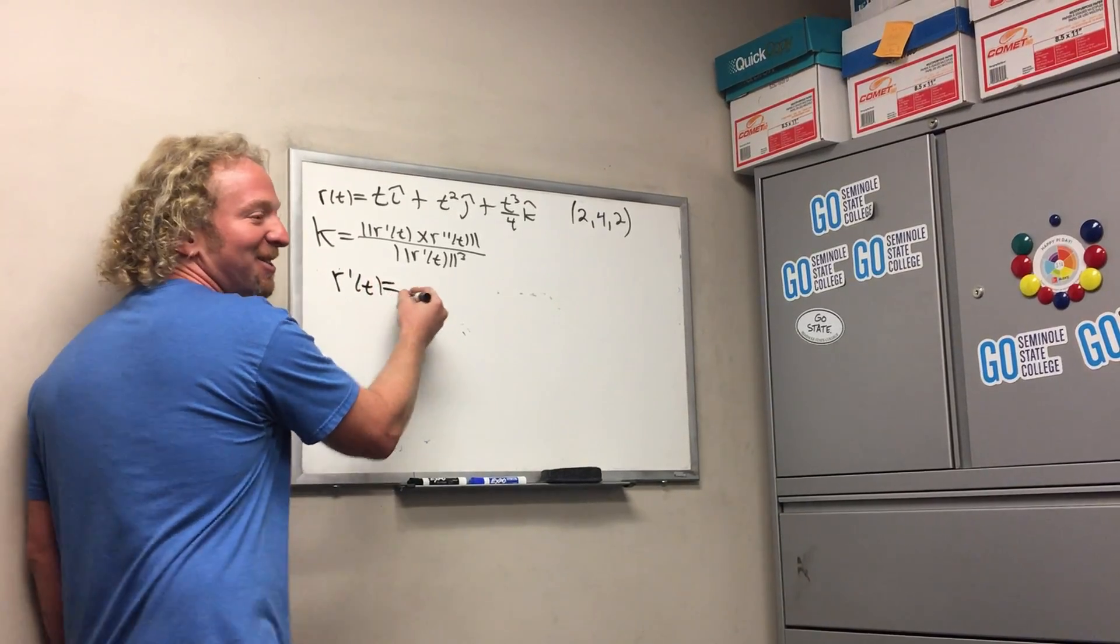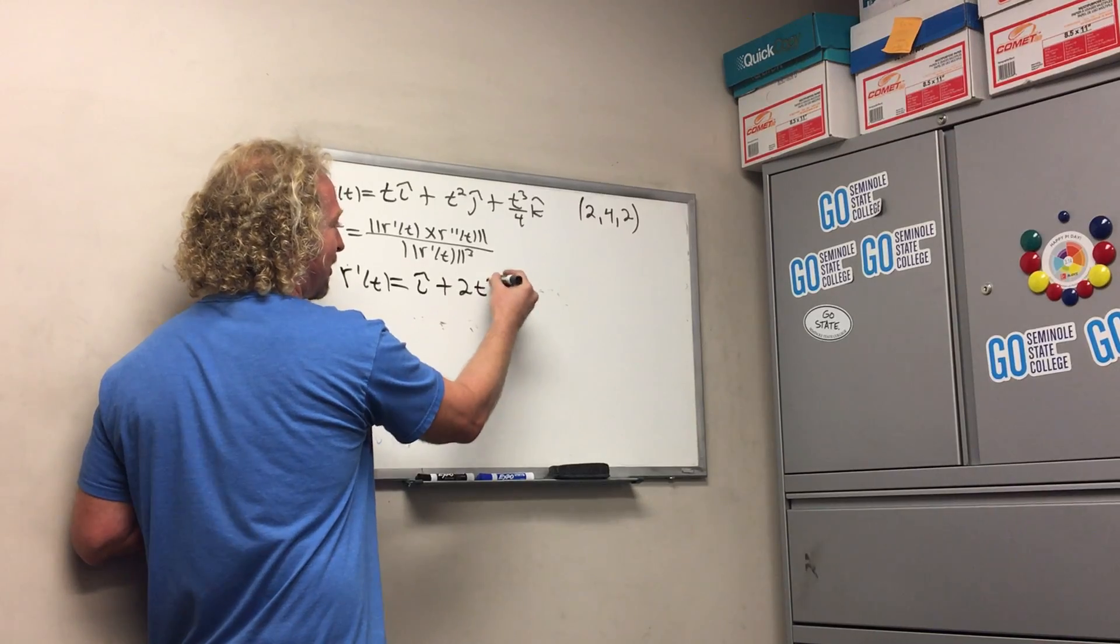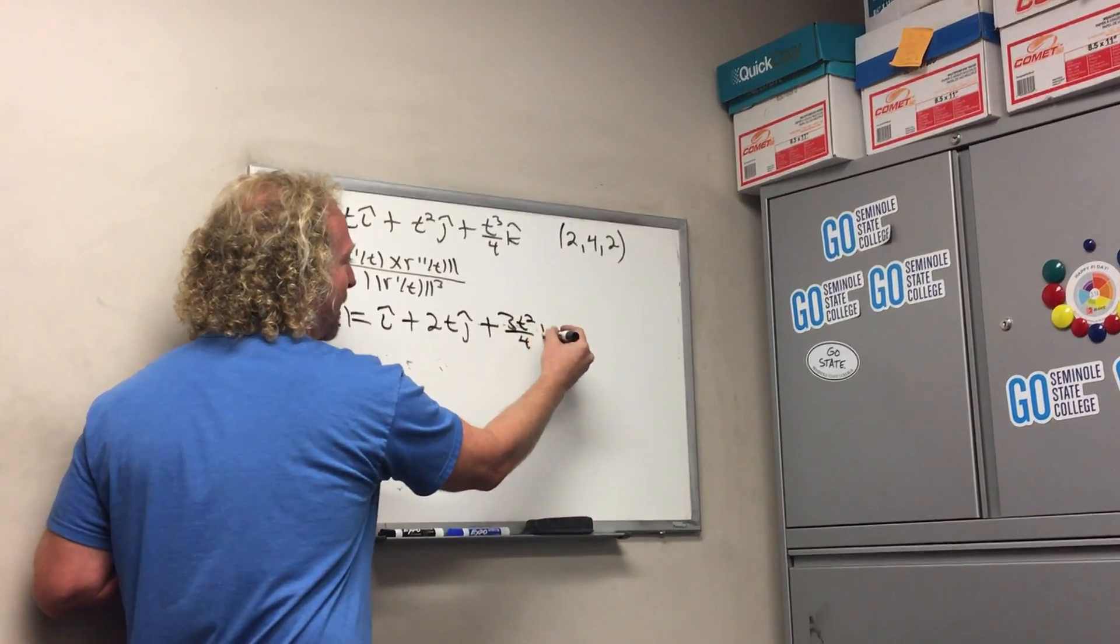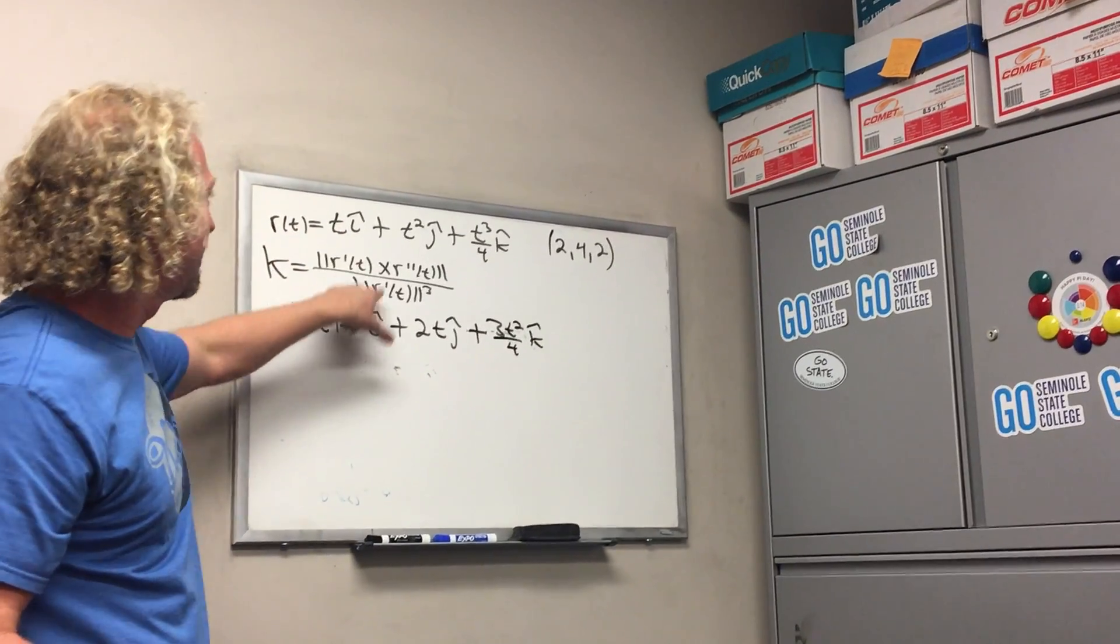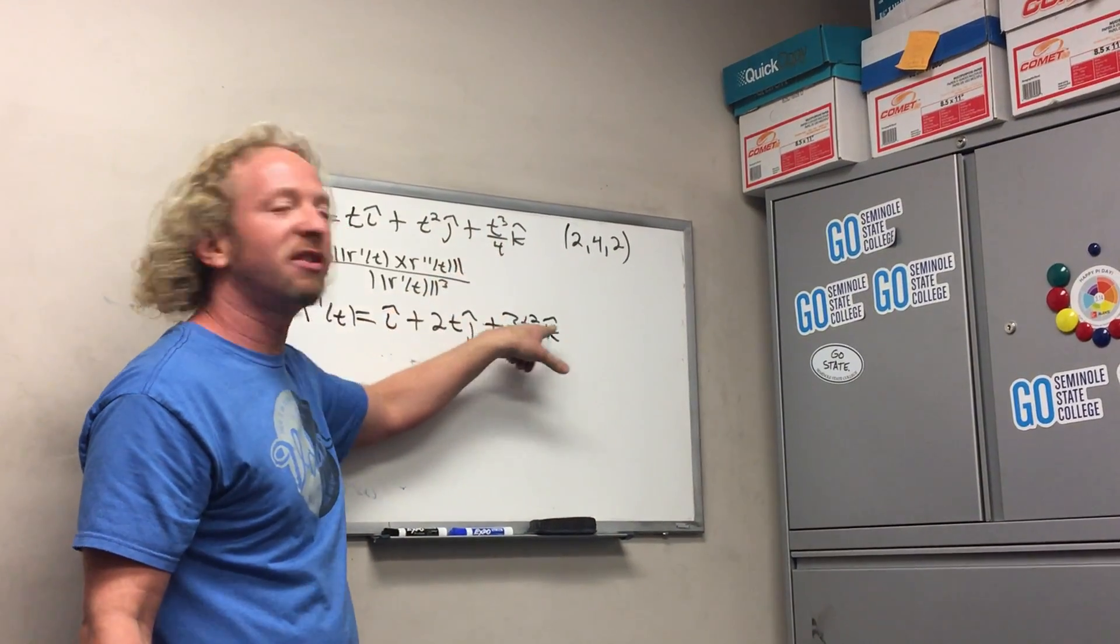So r prime: i, 2t j... the guy I used to know, I'm kidding. 3t² over 4 k. So that's the derivative - the derivative of t is 1, the derivative of t² is 2t, and the derivative here is 3t² over 4, and then you have the k hat.